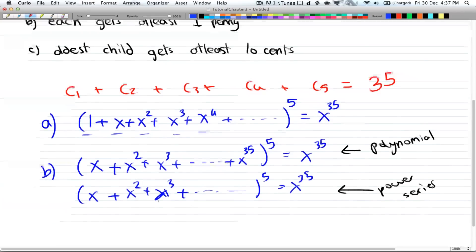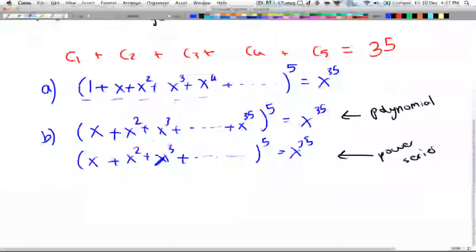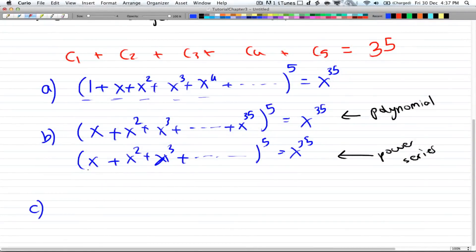Alright, so now we have part C. And part C says that the oldest child gets at least 10 cents. Alright, so you're going to set up the oldest child first. So you have the oldest child gets at least 10. So x¹⁰ + x¹¹, all the way till x³⁵. Multiplied by, okay, so now we have 10 cents missing. And the rest of the children, there are 4 other children. They can get either none, or 1, or 2, all the way up to x²⁵ to the power of 4. Because we removed 10 cents from here, you cannot have 35 cents given to the other kids. And that will be equal to x to the power of 35.